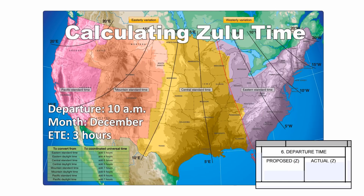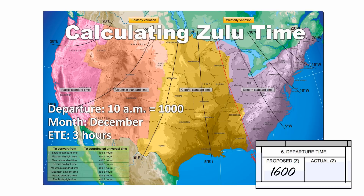In 24-hour time, your departure time remains at 1000 hours — we only add 12 if the time is after 12 o'clock noon. Since it's standard time, the offset will be plus 6, so 10 hours plus 6 means your departure will be at 1600 Zulu. A 3-hour trip means you would arrive at Pittsburgh at 1 p.m. central time or 2 p.m. eastern time — same time, just different time zones. You could just add 3 hours to your 1600Z departure and get an arrival time of 1900Z.